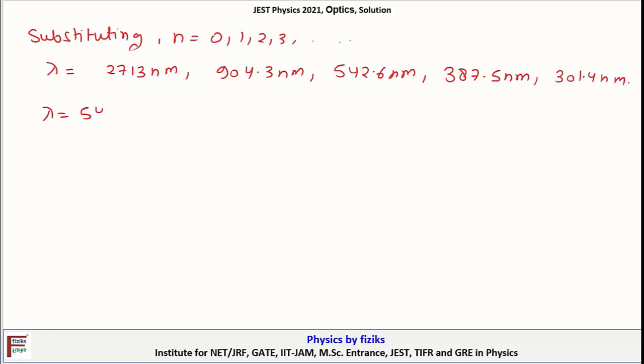This can be written as 2713/(2n+1) nanometer. Substituting n equals 0, 1, 2, 3 and so on, we would get λ equals 2713 nanometer, 904.3 nanometer, 542.6 nanometer, 387.5 nanometer, 301.4 nanometer.